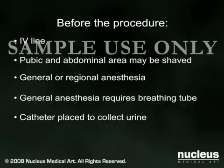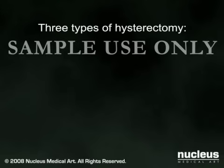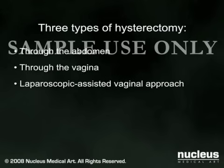A hysterectomy takes about one to three hours. There are three main ways to perform this surgery: through the abdomen, through the vagina, or using a laparoscope to assist a vaginal approach.